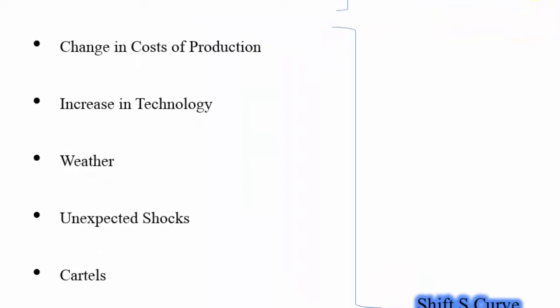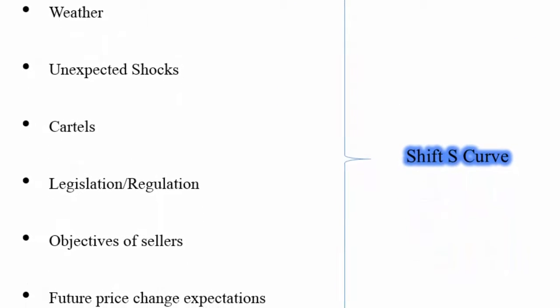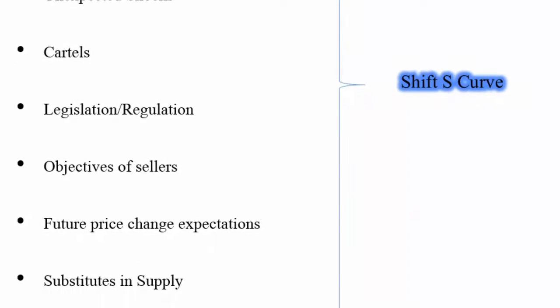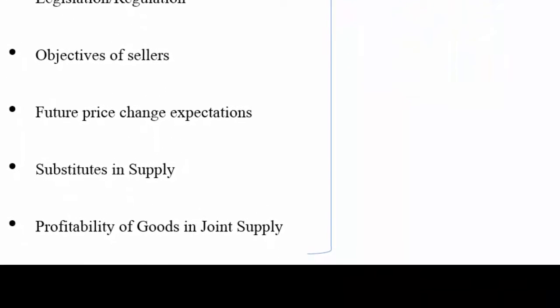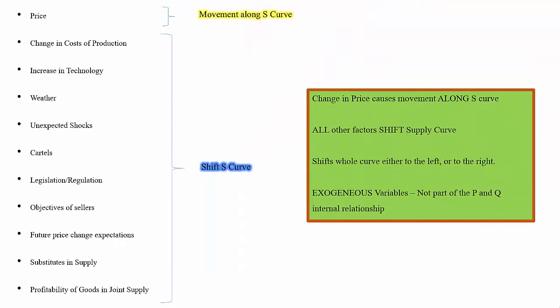For example, if there was unexpectedly bad weather during the growing season for corn in the UK, then if all other things were equal, the supply of corn in the UK would fall for that year and we would show that by drawing a leftwards shift on the supply curve. We're going to look through a few of these and see how they either increase or decrease supply.